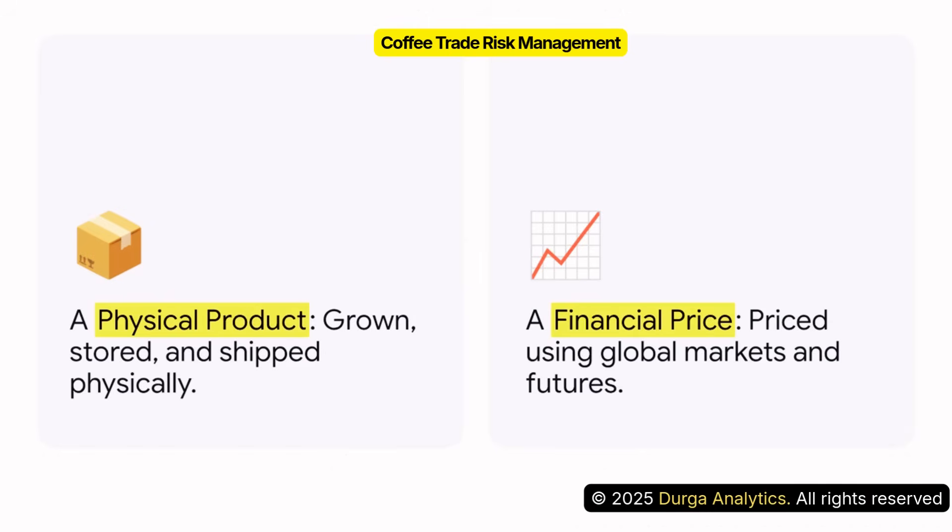This disconnect — this gap between the physical bean and its financial price — is the ultimate source of all price risk. It's what creates tricky challenges like basis risk, which, by the way, we're going to completely dissect in module four.